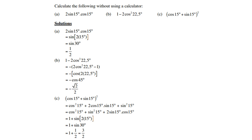For (cos 15° + sin 15°)²: expanding gives cos² 15° + 2 cos 15° sin 15° + sin² 15°. This equals cos² 15° + sin² 15° plus 2 sin 15° cos 15°, which is 1 plus sine of 30°, which is 1 plus one half, equalling three over two.